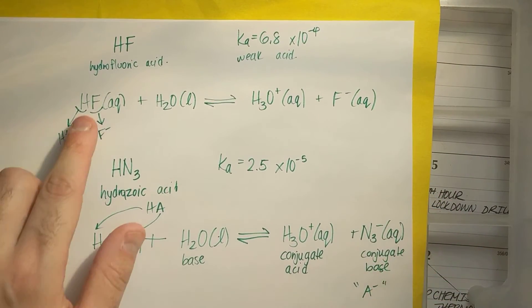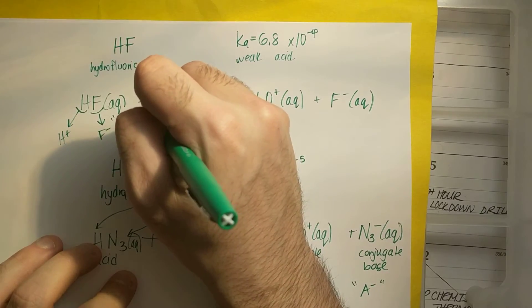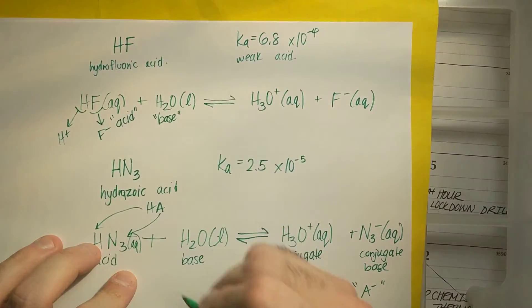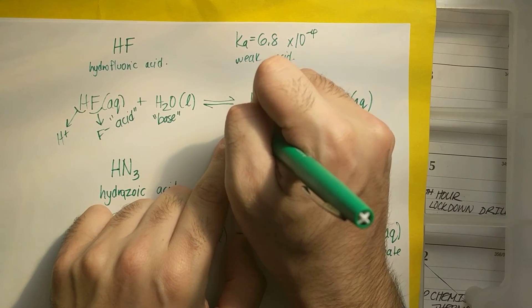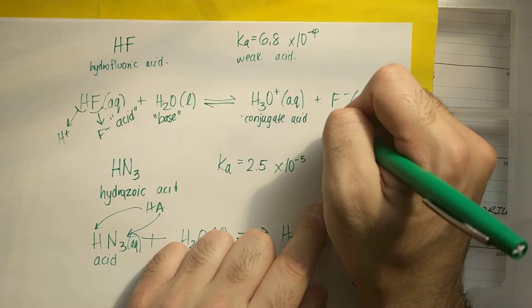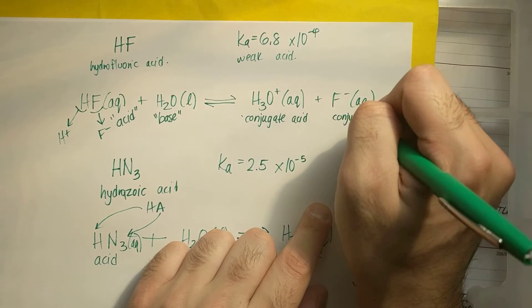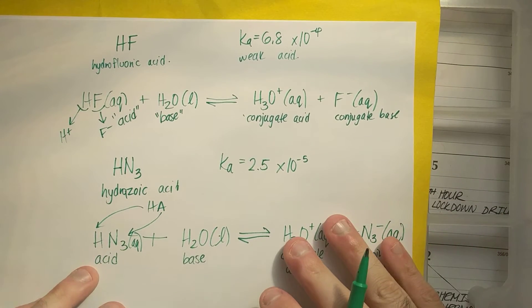Going back up here, same idea. HF will be my acid. My water will act as a base. I'll get H3O plus, which is my conjugate acid. And I'll get F minus, which is my conjugate base. I could write this backwards if I do bases.